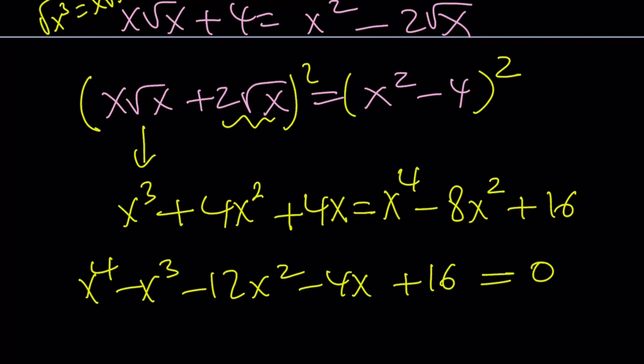This is a polynomial equation. Hopefully we have some integer or rational roots. Since the polynomial is monic — the coefficient of x to the 4th is 1 — we look at divisors of 16. There are 5 positive and 5 negative divisors. A very helpful check: the sum of the coefficients is 1 minus 1 minus 12 minus 4 plus 16 equals 0, which indicates x equals 1 is a solution. To keep a long story short, this polynomial factors into x minus 1 times x minus 4 times x plus 2 squared.